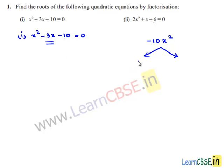5x and 2x can be the factors. Since we have a minus sign here, if I put a minus sign, minus 5x plus 2x becomes minus 3x. So the correct factors are minus 5x and 2x.